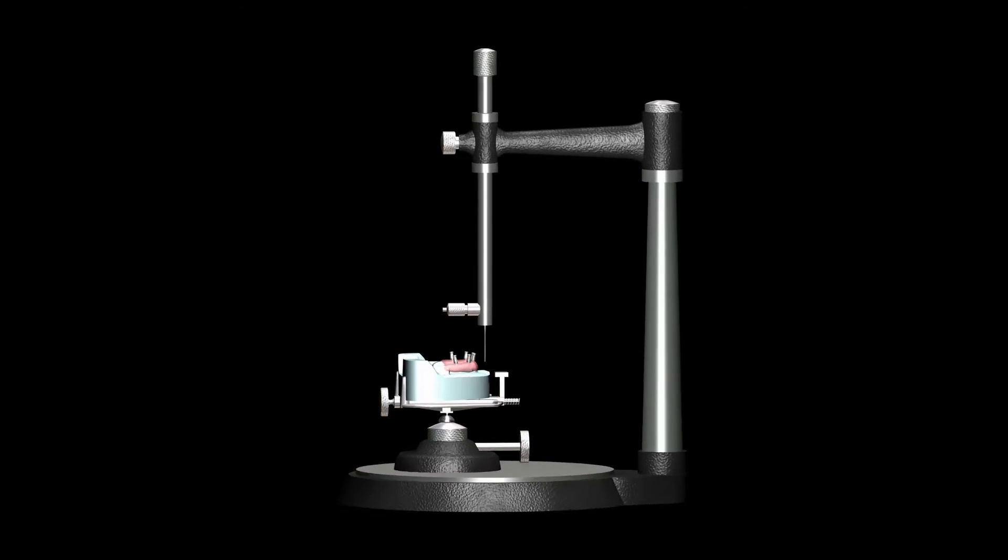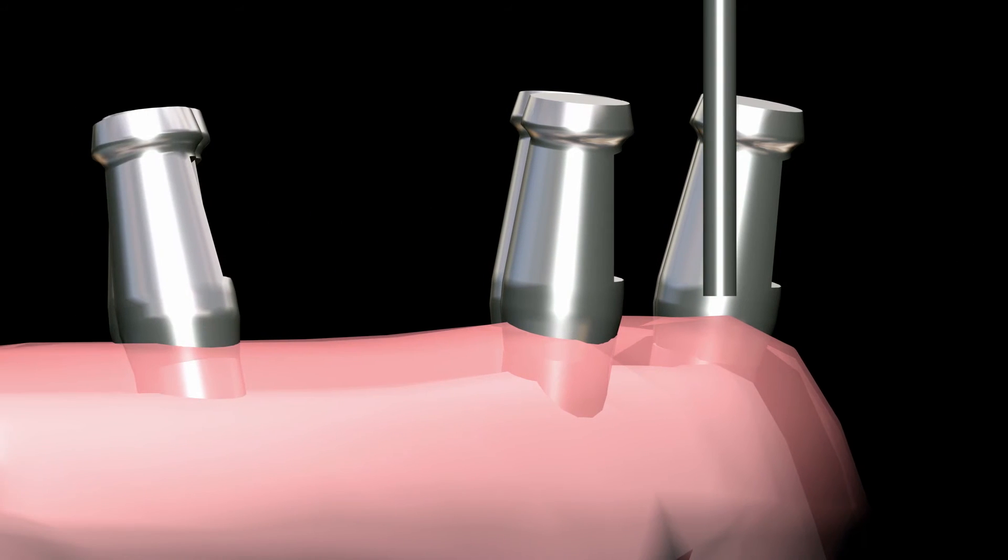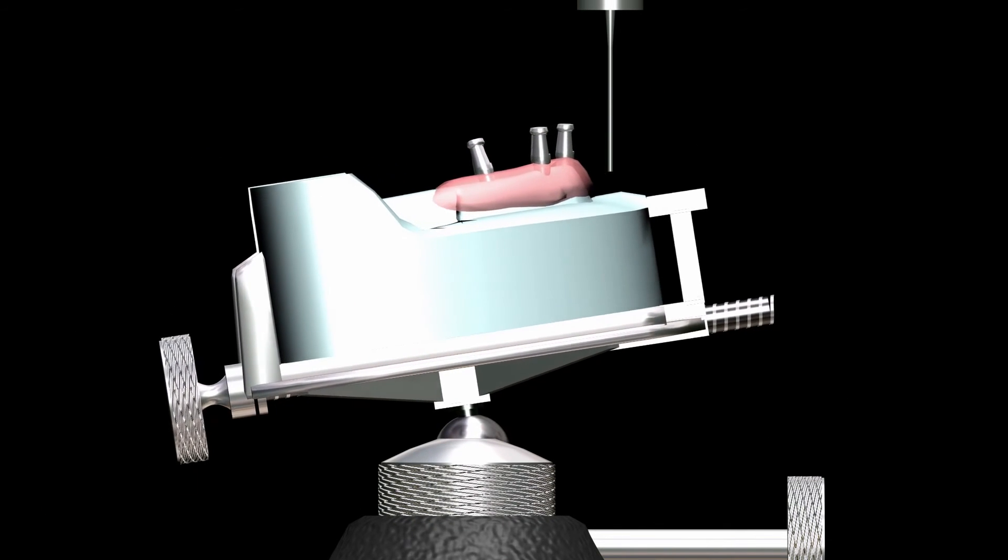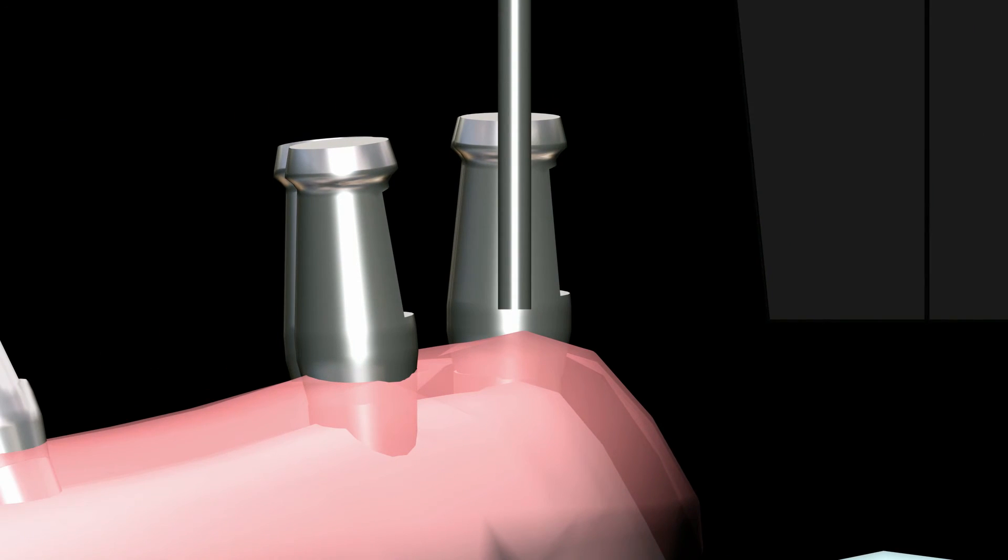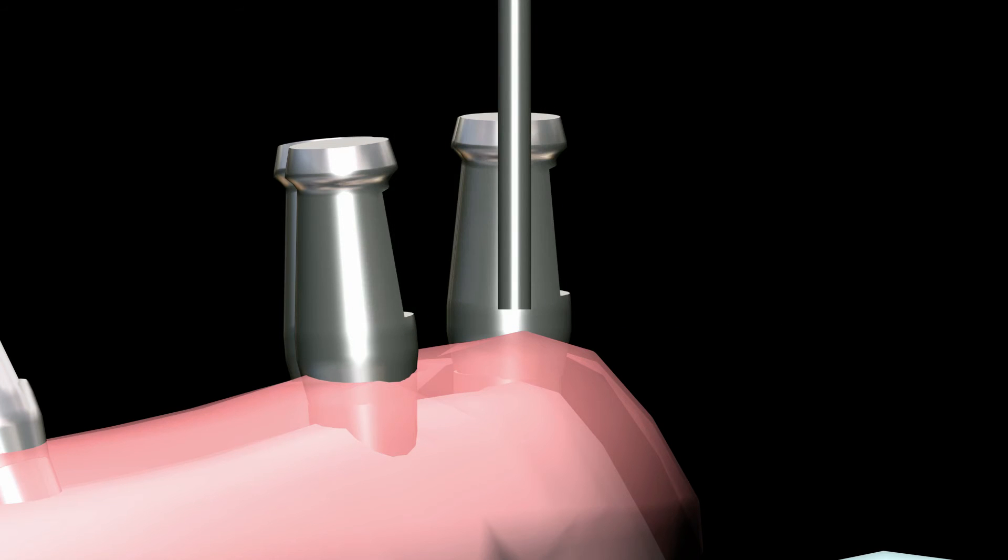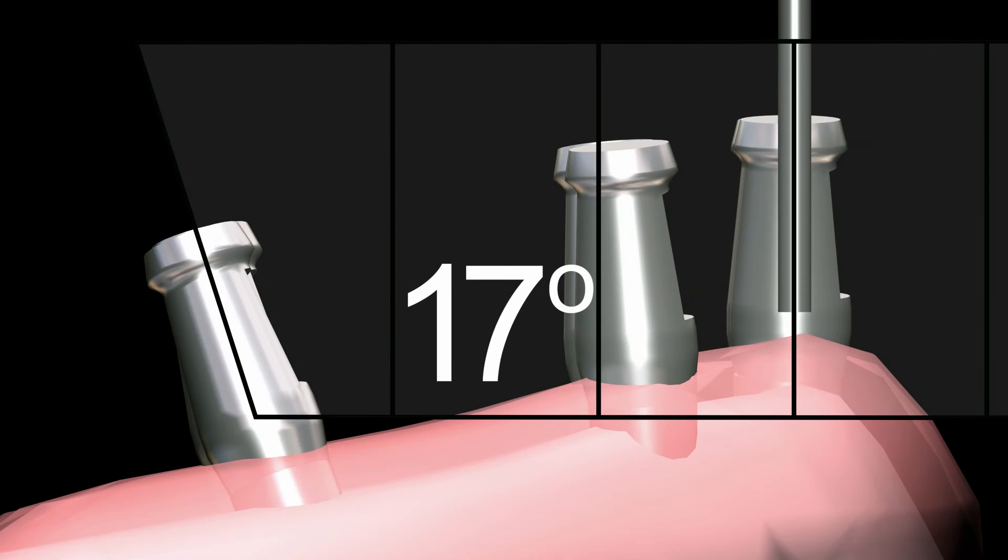The use of a dental surveyor is now utilized. Tilt the surveyor table to the desired path of insertion for the overdenture, considering the trajectory of the implants. Using a gauge, it is determined that in this particular case, the left impression coping is angled five degrees from the one on the right. The next one is angled by 17 degrees.